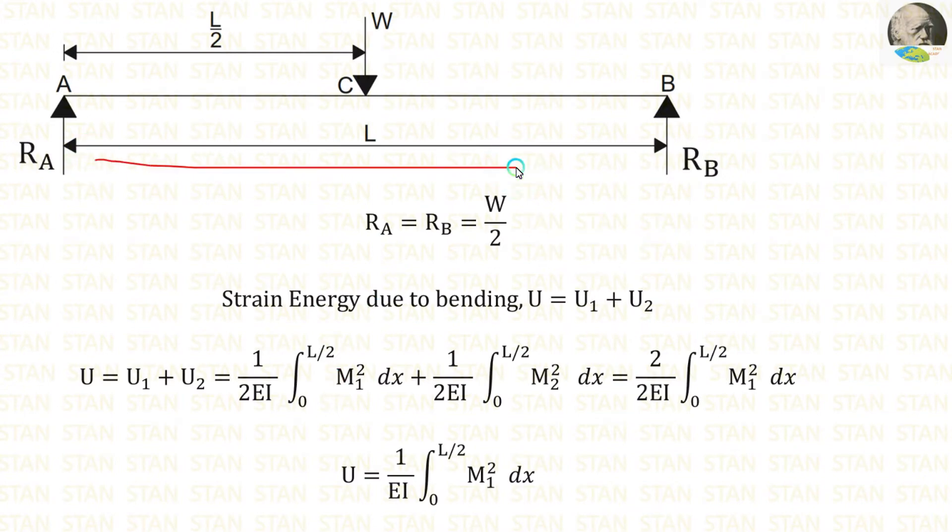In this simply supported beam, we can easily calculate the reactions because the point load is acting on the center. It is symmetrical. So, Ra is equal to Rb is equal to the total load by 2. Here the total load is W, so W by 2.